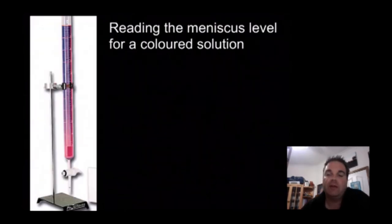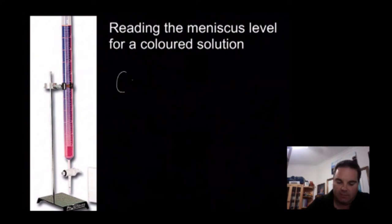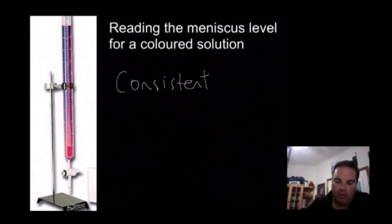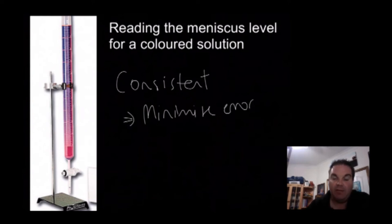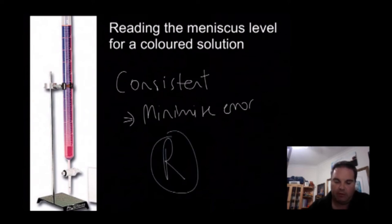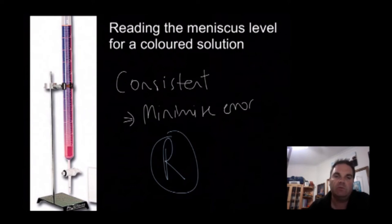Next is reading the meniscus level for a coloured solution. When doing titrations involving permanganate, for example, it's very difficult to read the meniscus effectively. The key is to be consistent - if you always read at the same level, you'll minimise your error. Every time you read it, it might be slightly different because of the difficulty of seeing the bottom of the meniscus. This is a random error. But if you're consistent about sometimes reading at the top of the level rather than the bottom of the meniscus, that can help minimise your random errors.